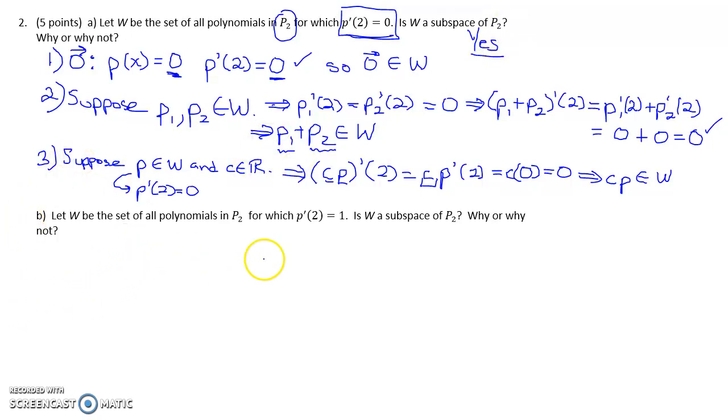Now quickly with part B, if we change this, if we require that the derivative at 2 is 1, then actually all three of these conditions will fail.